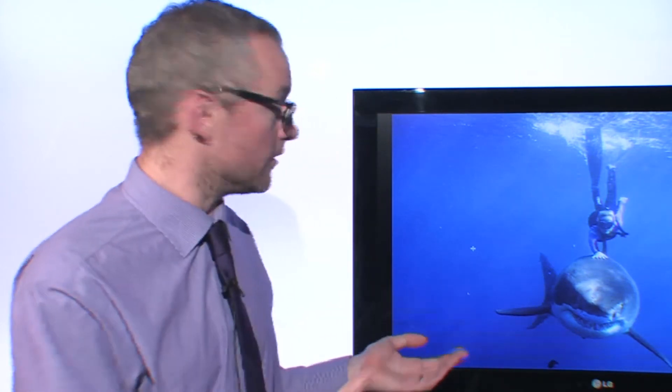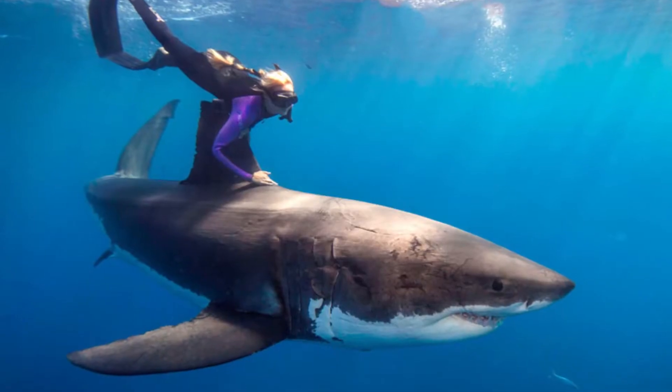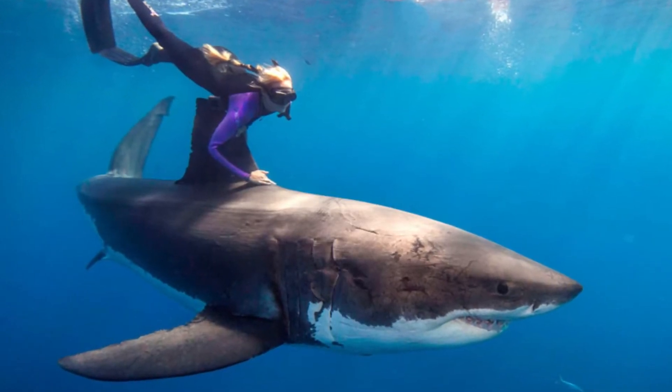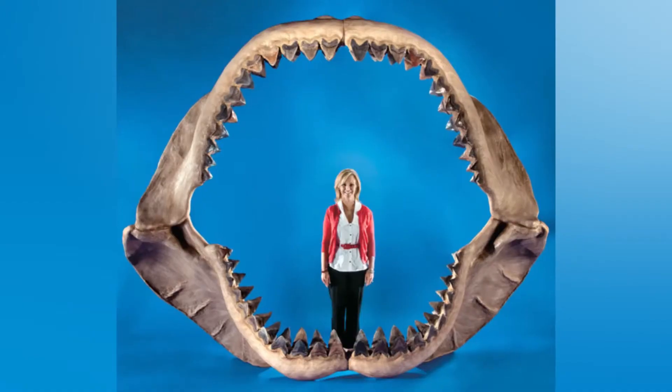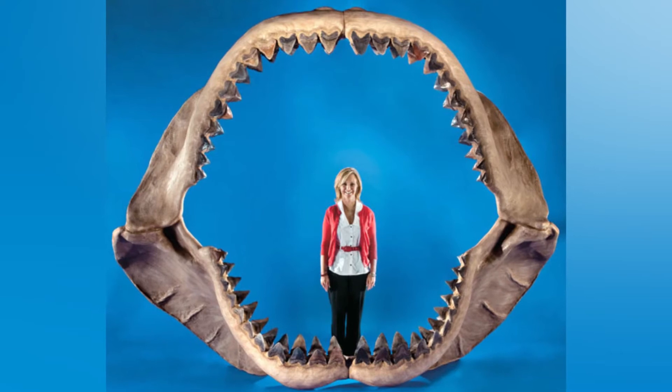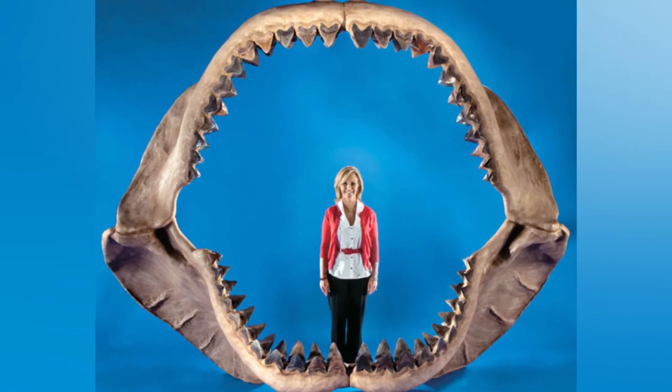The largest predatory shark alive at the moment is the Great White, obviously. And that's a fairly impressive 15 to 18 feet long, and weighs about two tons. But up until two million years ago, the largest shark ever lived, and that was called Megalodon. And it was about 70 feet long and weighed about 50 tons.